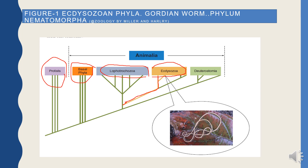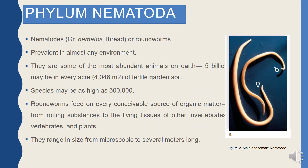So pseudocoelomate phyla are found in both Lophotrochozoa and Ecdysozoa, meaning there is close phylogenetic similarity. The coelomates in Ecdysozoa include Arthropoda, Onychophora, and Tardigrada. In Ecdysozoa there are two categories — pseudocoelomates and coelomates. After all the Ecdysozoa phyla, the last clade will be the Deuterostomes. Ecdysozoa also contains protostomes. This worm shown is a Gordian worm, belonging to Phylum Nematomorpha. Let's now discuss Phylum Nematoda.